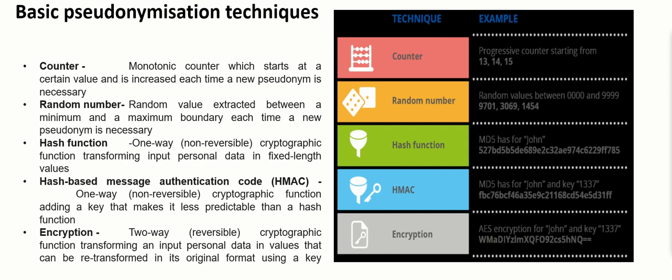There are various solutions available, referred to as pseudonymization techniques. The first technique is the counter technique, another is random number generation, the third is the hash function, and encryption techniques are also commonly used across organizations. These basic security techniques can be used to pseudonymize the data.